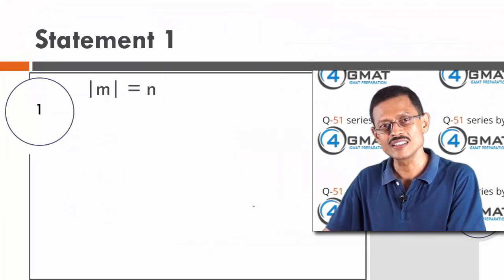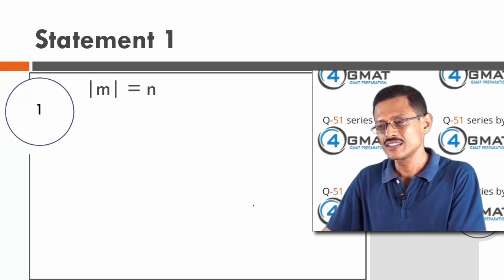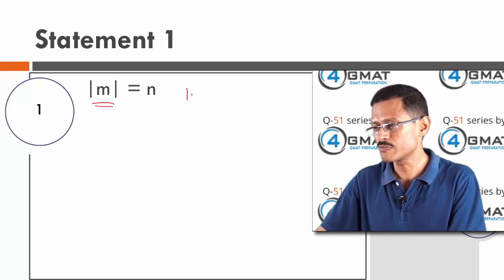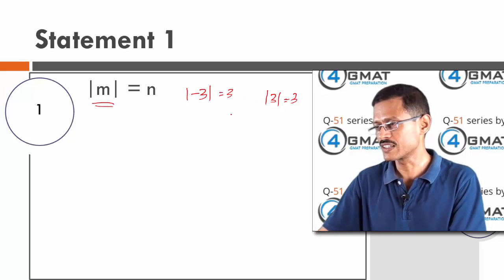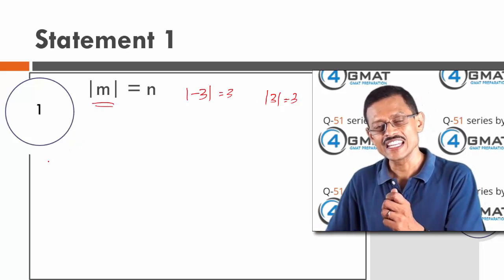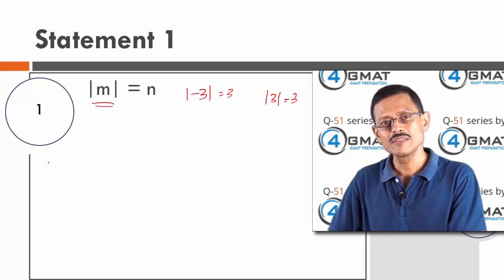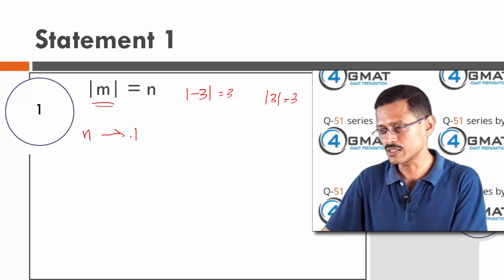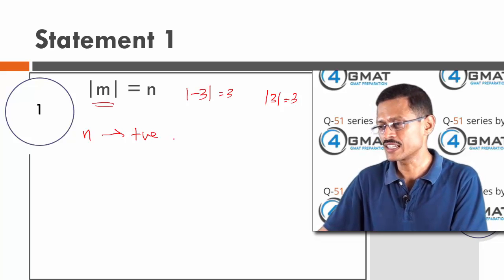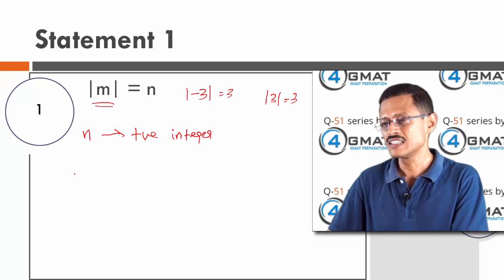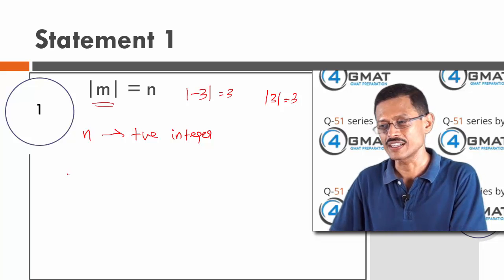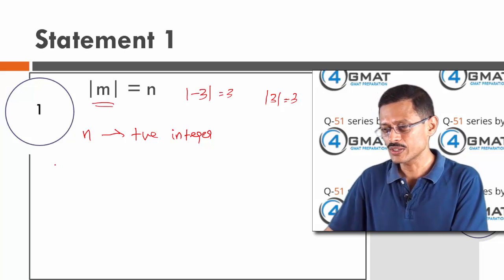Statement 1 says modulus of m is equal to n. Modulus refers to the magnitude of a number — for example, mod of minus 3 equals 3, and mod of 3 also equals 3. So n equals the modulus of m, which is always a positive number. Therefore n is a positive integer. The only thing to check is what happens when m takes positive values and what happens when m takes negative values. We'll start with m being negative.